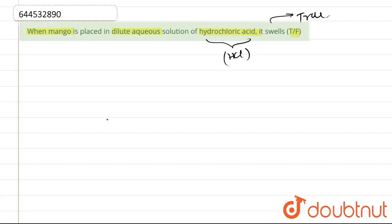The reason being that the outer solution is actually hypotonic. It is actually hypotonic with respect to the solution which is inside the mango.